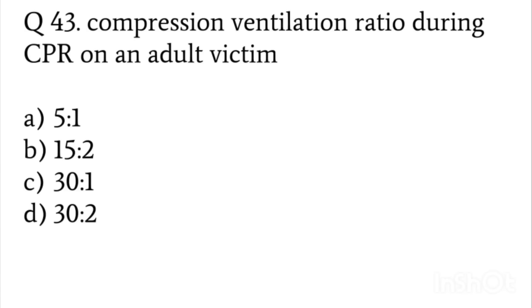Compression to ventilation ratio during CPR on an adult victim will be how much? Options: 5 to 1, 15 to 2, 30 to 1, or 30 to 2. The answer is 30 to 2.